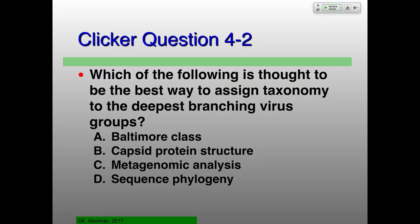Final clicker question: which of the following is thought to be the best way to assign taxonomy to the deepest branching virus groups? Options: Baltimore class, capsid protein structure, metagenomic analysis, or sequence phylogeny.